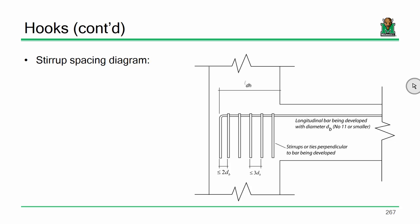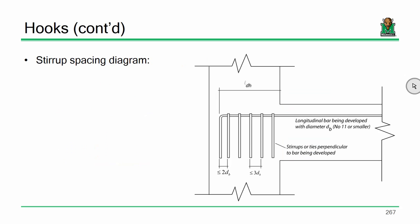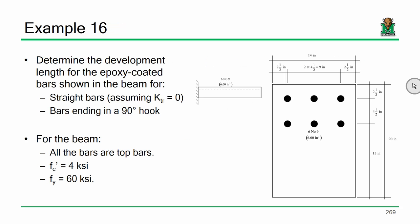Now, we don't really care about the location of bars or the bar size because when you're dealing with hooks, you're developing that reinforcement differently. Really, the epoxy coating is the only thing that can affect your development length. And that's it. So, pretty plug and chug. A couple of instances. If you've got 90 degree hooks and you've got the following cover requirements met, you can reduce your development length 30% or you can multiply it by 0.7.